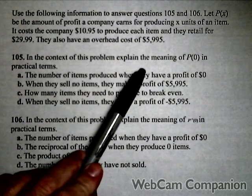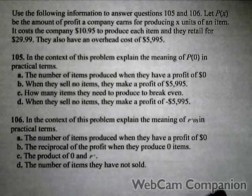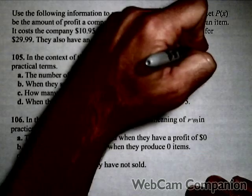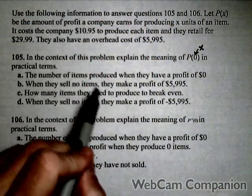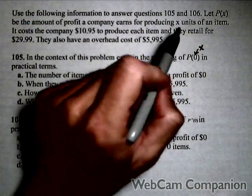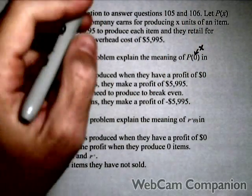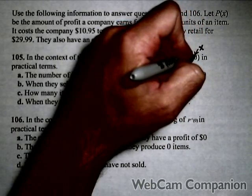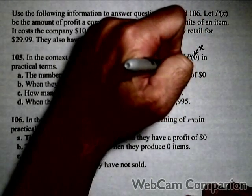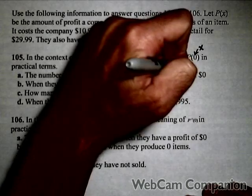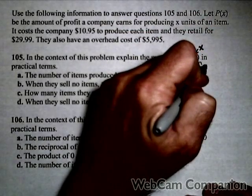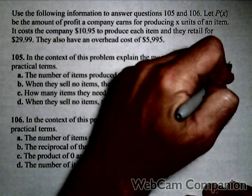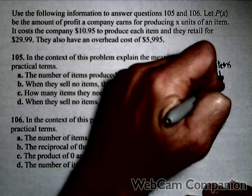In the context of this problem, explain the meaning of P(0) in practical terms. Well, that 0 is an x value, so we're identifying our input. X is the number of units. So this is going to give us the amount of profit if they produce no items. This is profit if 0 items are sold, produced and sold.